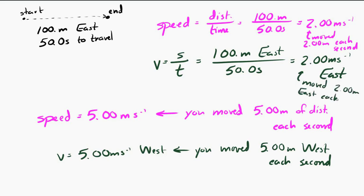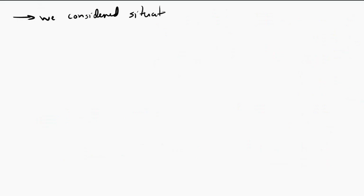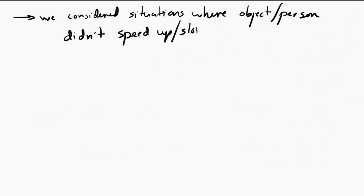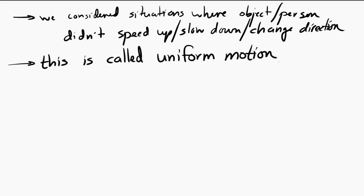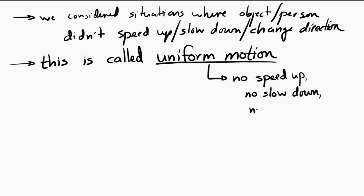One way those two situations were similar and somewhat simple is that the person did not speed up, did not slow down, did not change direction, did not stop — the person was always moving at a steady pace, either always running or always walking. A situation where the object does not speed up, does not slow down, and does not change direction, but always moves at a consistent pace, is called uniform motion. Of course, things do speed up, slow down, and change direction, but uniform motion is a great starting place, and we'll worry about the more complicated situations a little bit later.